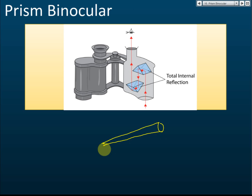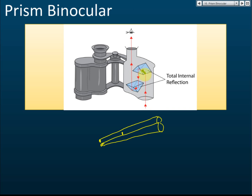The light needs to travel a certain path length before reaching the second lens, making the device too long. One method to reduce the distance between the two lenses is by using prisms to reflect the light. The light goes here, reflects back, and travels here and here. With a few reflections, the distance from one end to the other is already 50 cm, so the binocular doesn't need to be very long.